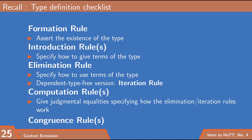Recall the type definition checklist: to introduce a new type you need to provide several rules. For arrow types we've covered the formation rule, the introduction rule (lambda abstraction), and the iteration rule (modus ponens / application). The main thing remaining is the computation rule, which gives judgmental equalities specifying how the iteration rule works. For arrow types there are two well-known computation rules: the beta rule and the eta rule.